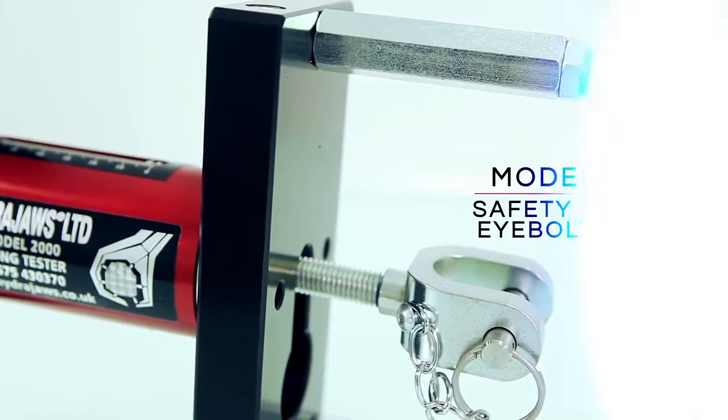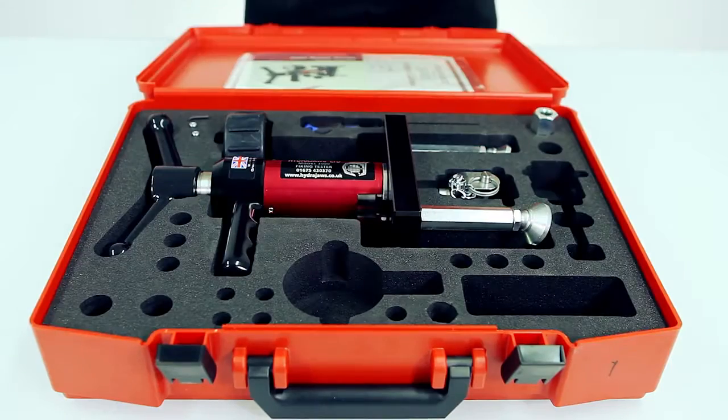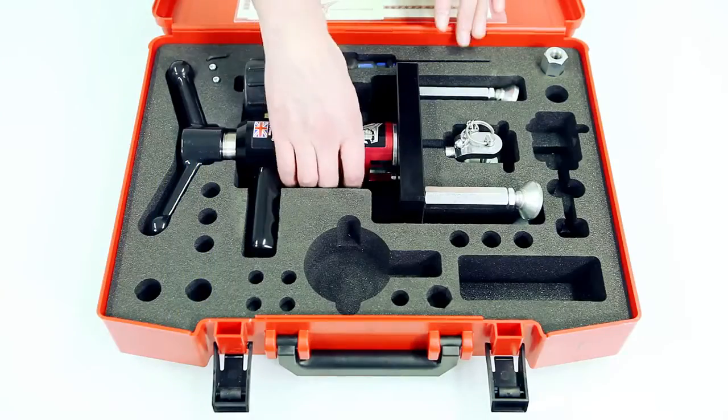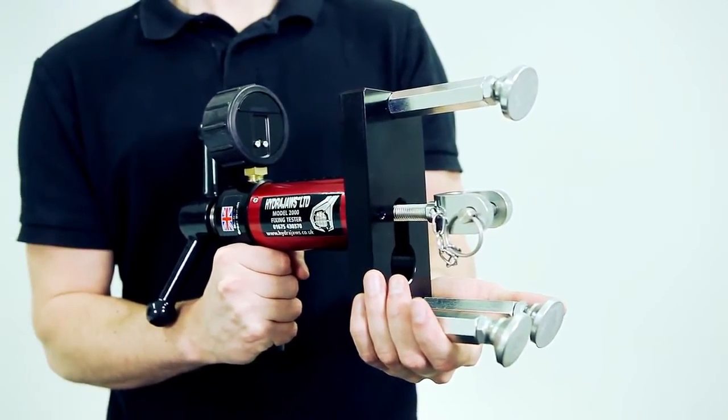The HydraJaws model 2000 safety harness eye bolt tester kit is a dedicated kit for testing eye bolts in accordance with the British and European standard BS EN 795.